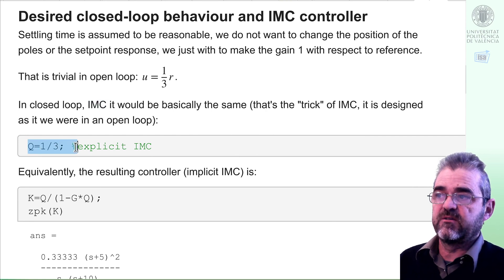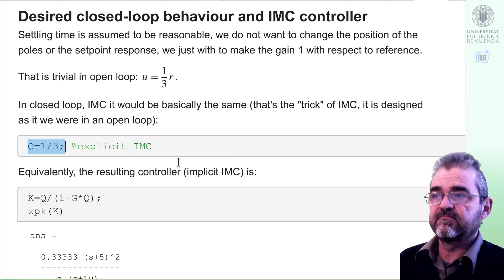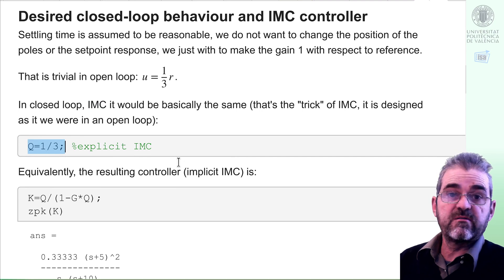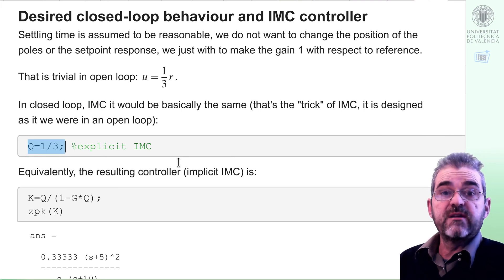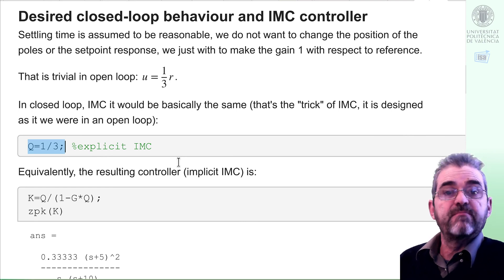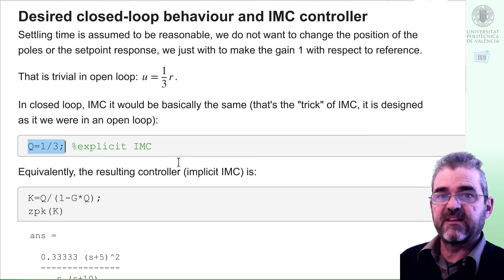So good. This means that the Q parameter, if I were to implement an explicit IMC, would be 1/3. And with this parameter, the closed loop poles would be exactly at the same place as the open loop ones. So we would have finished our exercise if we were in a pen and paper examination. But okay, as we have MATLAB, let us analyze the setpoint and disturbance response of this IMC controller.